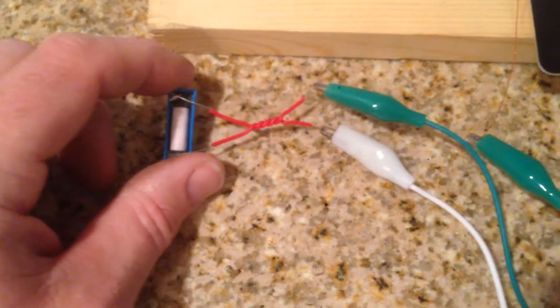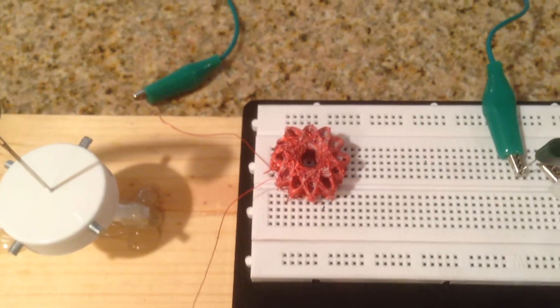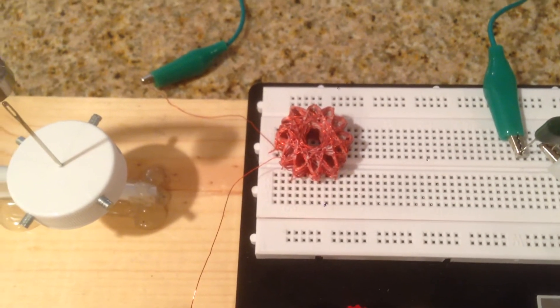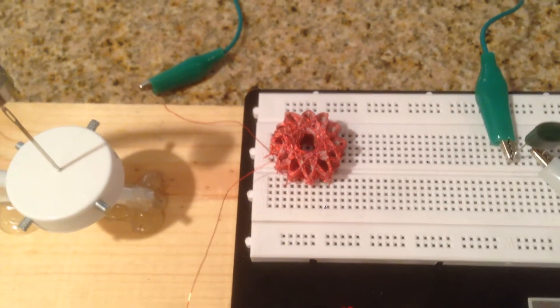One side, that white lead, goes to a reed switch, and the other side goes to one side of the coil. We've got a 12-point Starship coil with super glue trying to hold that together. The other side goes back to the capacitor.